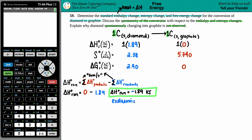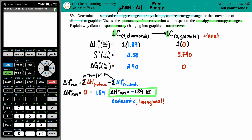When this reaction occurs and diamond converts to graphite, heat is lost to the environment — it gets hot. Heat is on the product side for an exothermic reaction. Exothermic reactions are favorable in chemistry. Now let's use the same formula to find the entropy change, delta S, which always talks about randomness or chaos of the system.